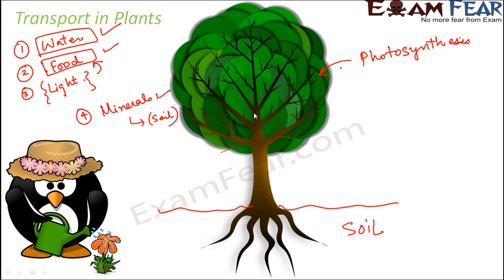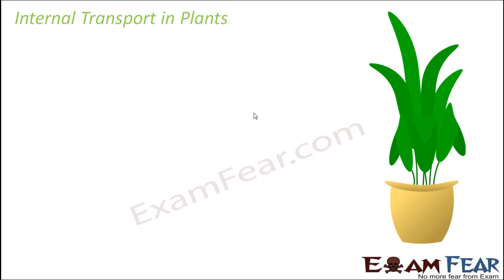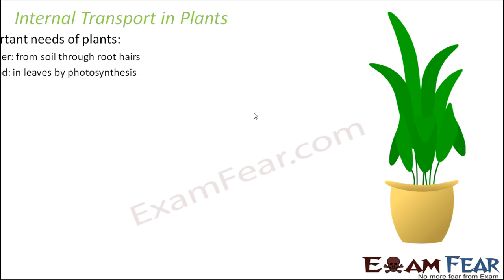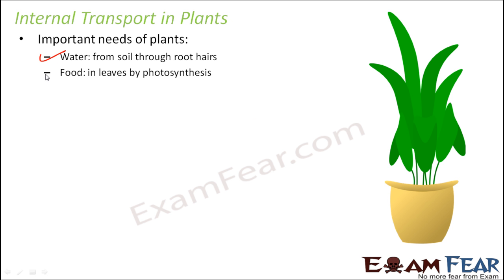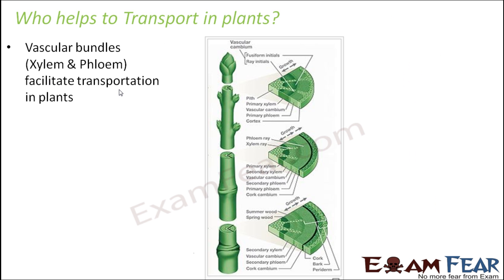The important needs of plants are water and food. Water is present primarily in the soil — that is why when we water a plant we put water into the soil, as soil particles have good capability to hold water. Plants can then absorb water through their root hairs as needed. Food is the other important need, which is prepared by the process of photosynthesis in the leaves of plants.